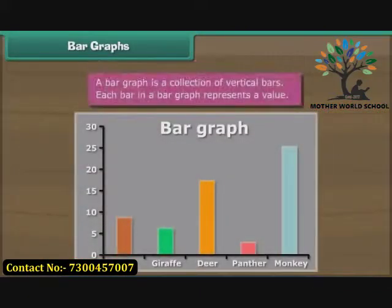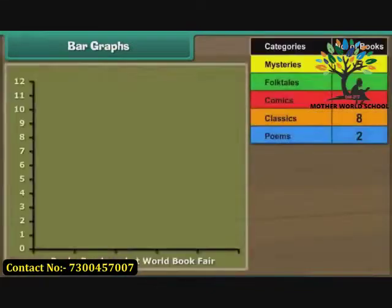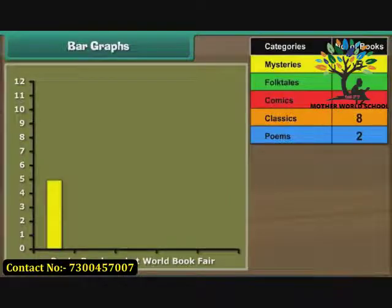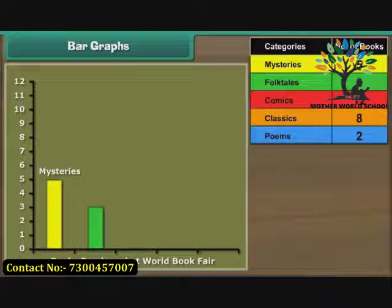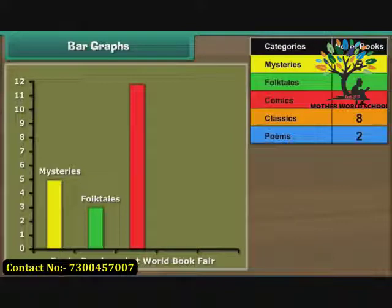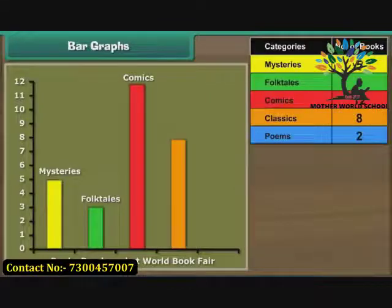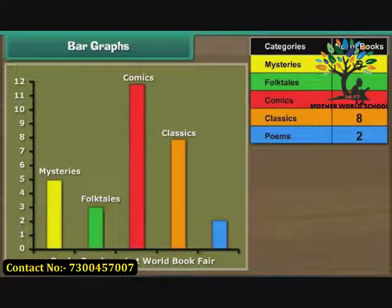A bar graph is a collection of vertical bars. Each bar in a bar graph represents a value. Let us now organize Ravi's data in the form of a bar graph. We first draw a bar 5 cm tall to represent mysteries, then a bar 3 cm tall for folktales. Next, we draw a bar 12 cm tall for comics, a bar 8 cm tall for classics, and last, a bar 2 cm tall for poems. The bar graph is ready.